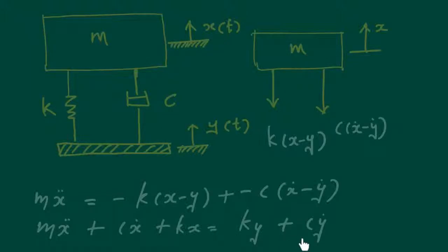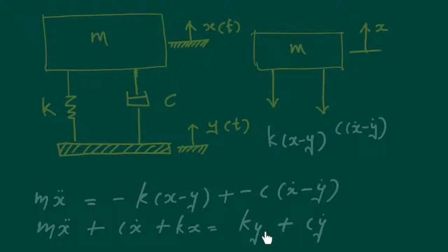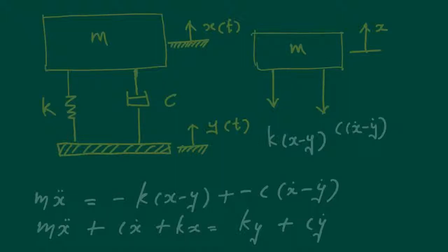The forcing function on the right-hand side must be harmonic for the formulas we have already developed to apply. When the base undergoes harmonic excitation, the sum of the ky and cẏ terms is harmonic. That is why textbooks always specify harmonic base excitation — at this stage we limit the base displacement to be harmonic because the theory has been developed for harmonic excitations.